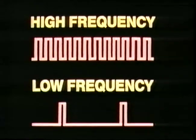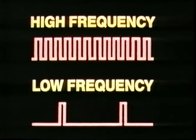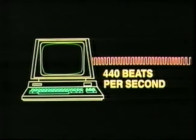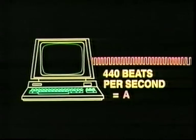The more frequent the blips, the higher the note, and the less frequent the blips, the lower the note — which is why the highness or lowness of a note is called its frequency. For example, if we get the computer to turn a circuit on and off precisely 440 times a second, we will hear 440 blips per second, which happens to be the frequency of the musical note A.